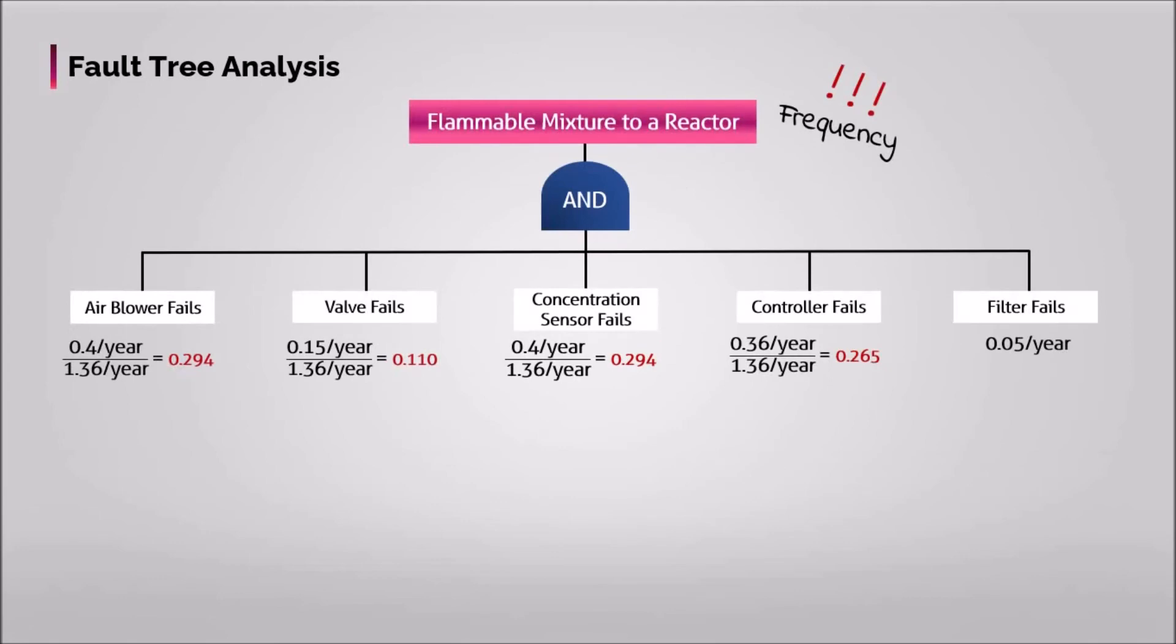Here, as mentioned previously, one of the failures should be expressed with frequency, not probability. So here, let's keep filter fail option as frequency.